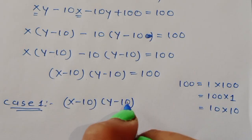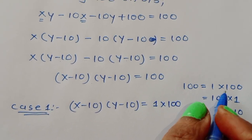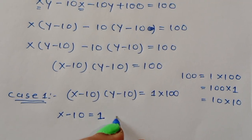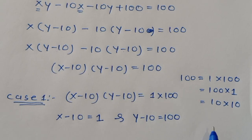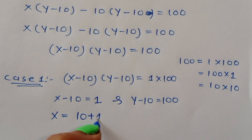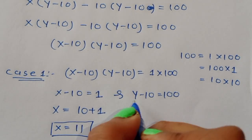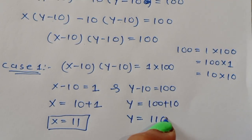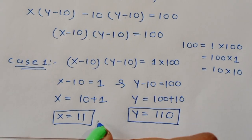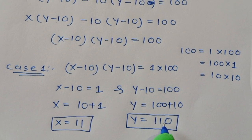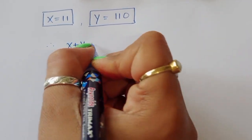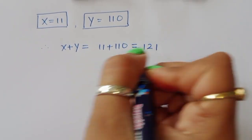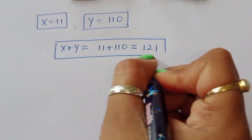Case 1: (x minus 10)(y minus 10) equals 1 times 100. Comparing, x minus 10 equals 1 and y minus 10 equals 100. Therefore x equals 11 and y equals 110. So x plus y equals 11 plus 110, which equals 121.